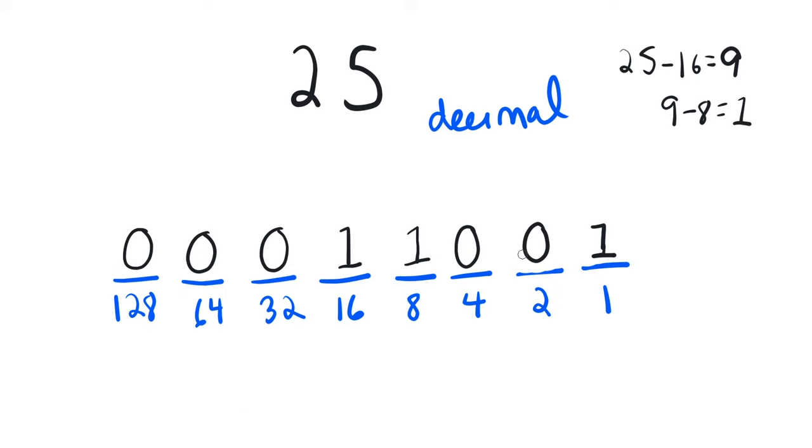So this is the basic strategy that I use for converting numbers from decimal to binary, and this will work for numbers up to 255, using these 8 bits here. Beyond that you're going to need more bits, and honestly at that point you might want to just use a calculator or write a program to do it.